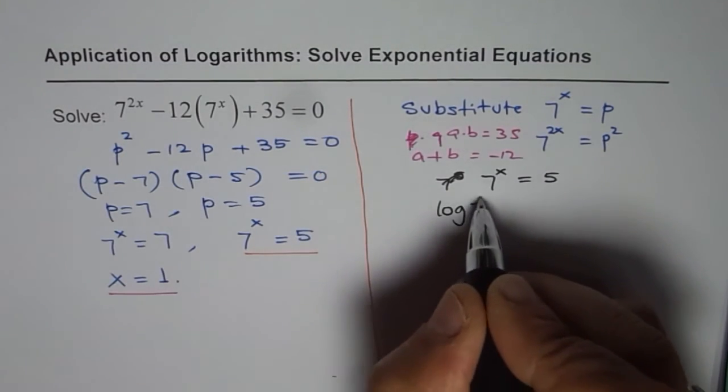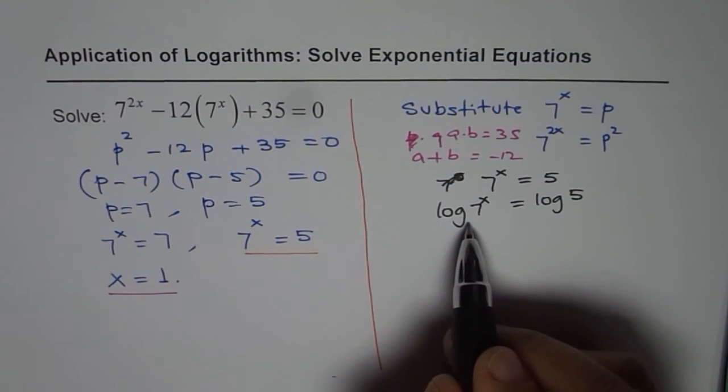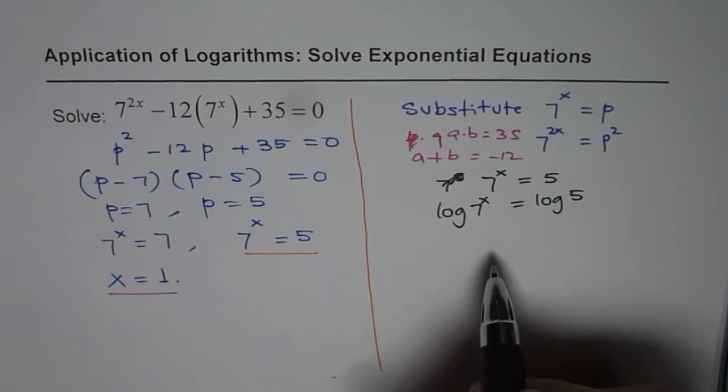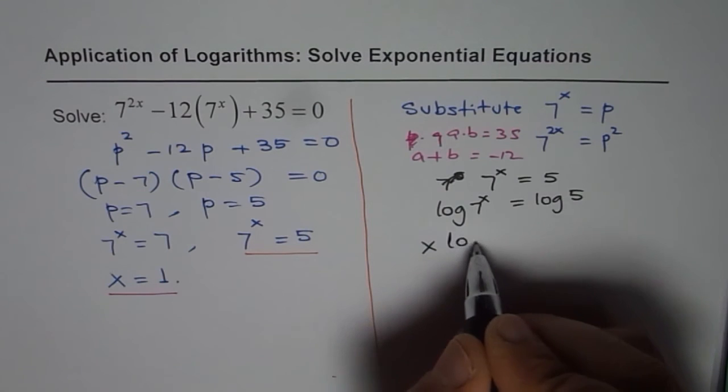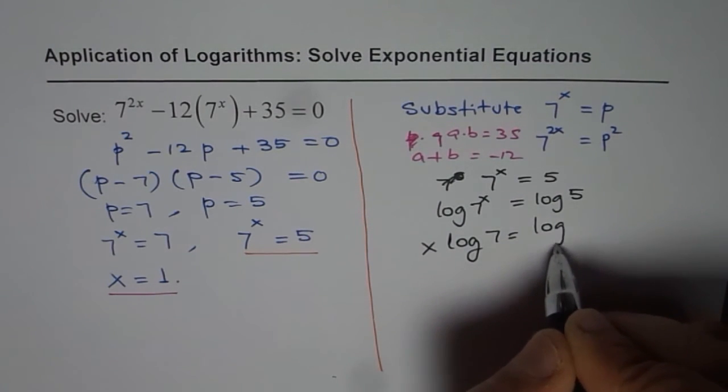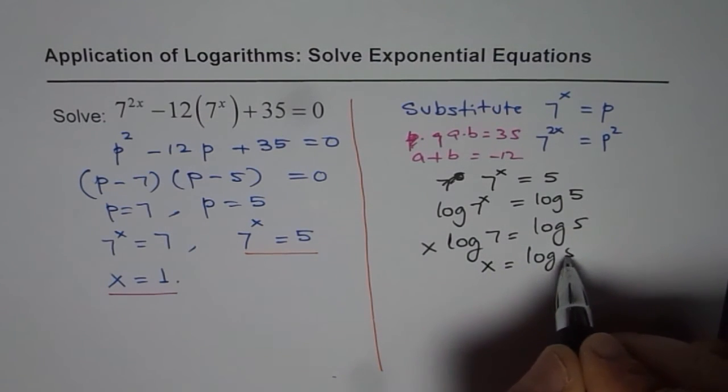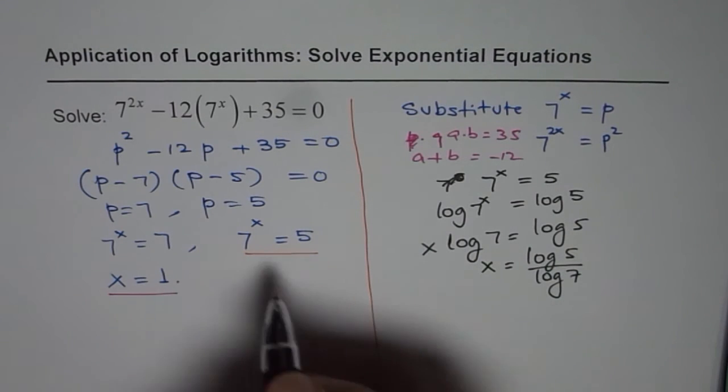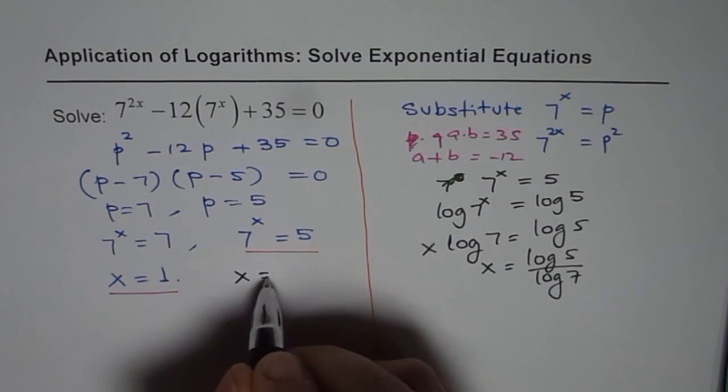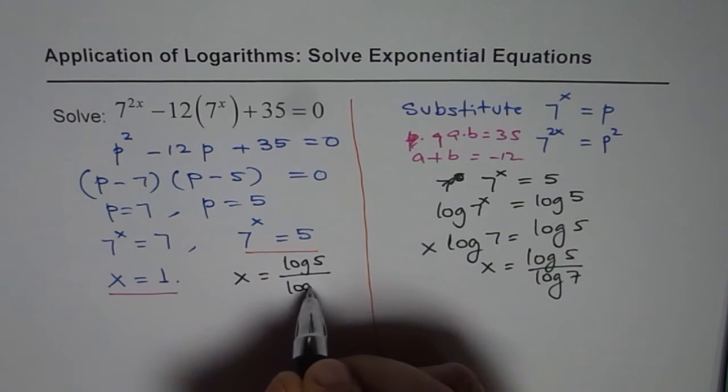We say log of 7 to the power of x equals to log of 5. Now when I don't write anything in the base it is assumed to be 10, so we can use the calculator. Now this means from log properties I could write this as x log 7 equals to log 5. So x is equals to log 5 divided by log of 7. Now that is the exact answer. So exact answer would be x equals to log of 5 divided by log of 7.